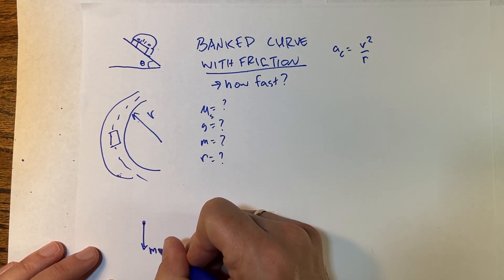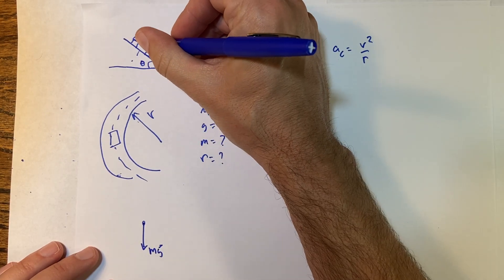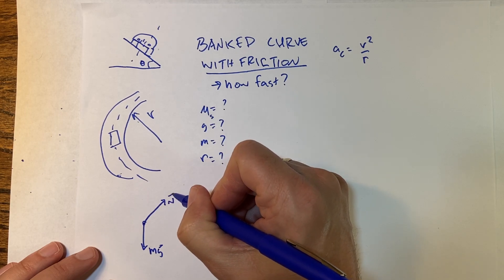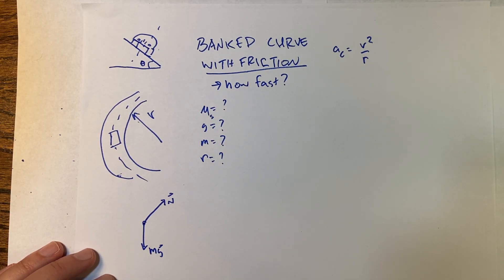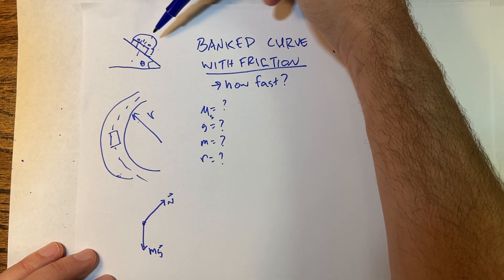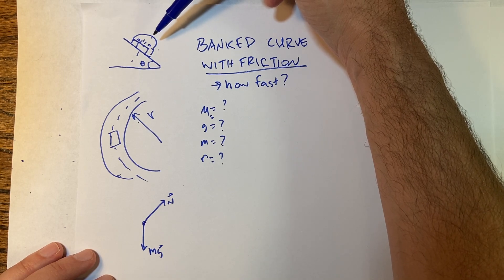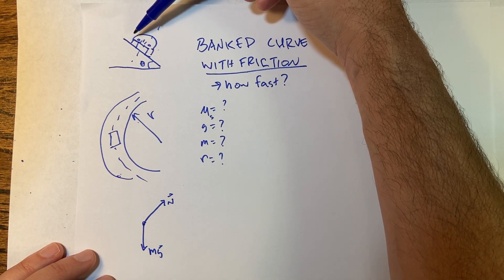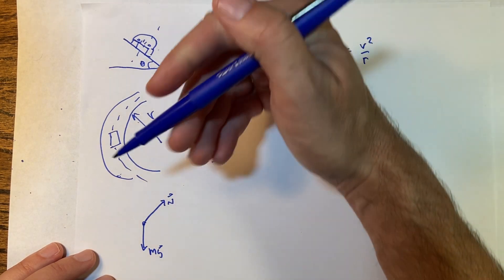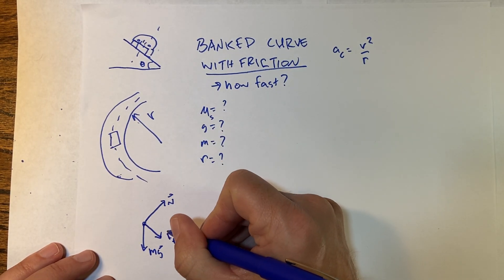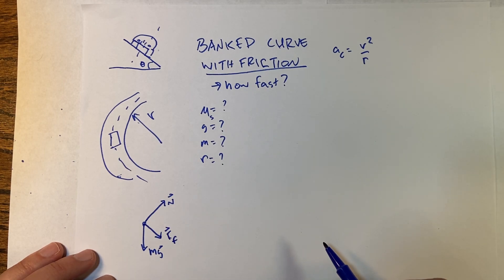Just like before, I'm going to draw a force diagram. Here's my car. The gravitational force is down, the normal force is at an angle, and now I have another force. What is that other force? There's a friction force — but which way is it going? Let's say the car is going super fast, at its maximum speed without slipping. In that case the car would want to slide up, so the friction force is actually down. Let's call it f-friction.